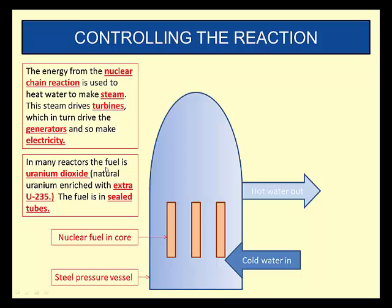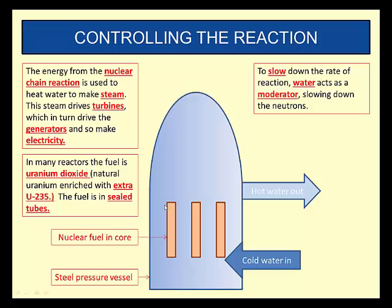In many reactors the fuel is what we call uranium dioxide — natural uranium enriched with extra uranium-235. The fuel is in sealed tubes or sealed rods. To slow down the rate of reaction, water acts as a moderator, moderating it by slowing down the neutrons.